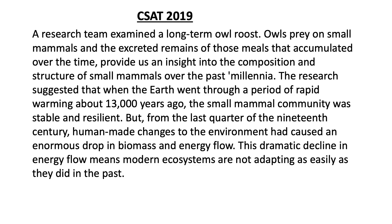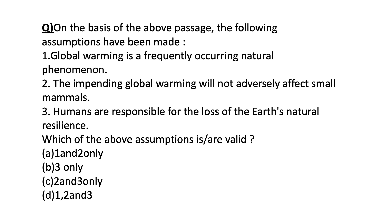Another passage. On the basis of the above passage, the following assumptions have been made: (1) Global warming is a frequently occurring natural phenomenon — we don't know about this, so put it on hold; (2) The impending global warming will not adversely affect small mammals — logically this statement is wrong because we cannot say with surety whether global warming will or will not adversely affect small mammals in the future. Eliminating statement 2 takes you straight to the answer — option B. The passage here is quite long, but if you directly solve the question using elimination, you can reach the answer very easily without wasting even a single minute.